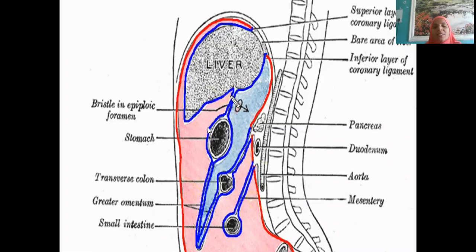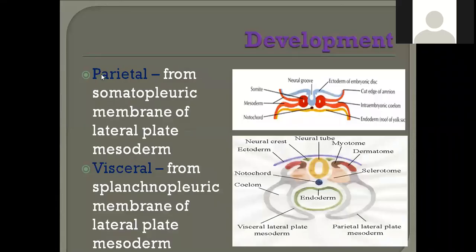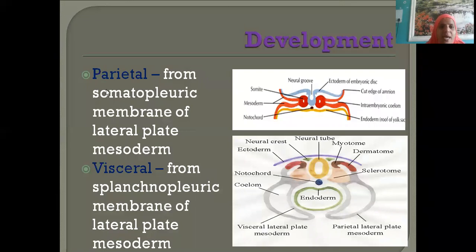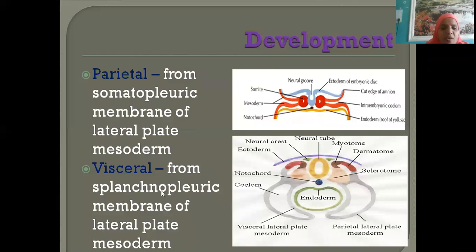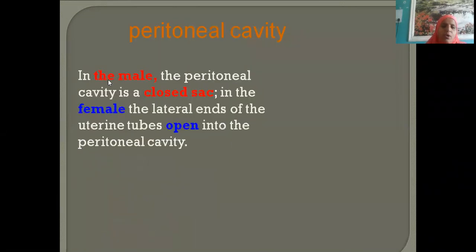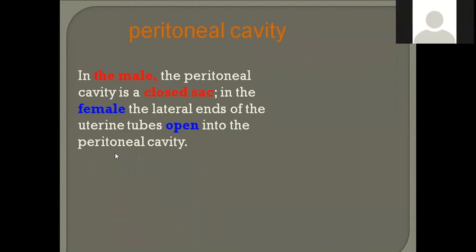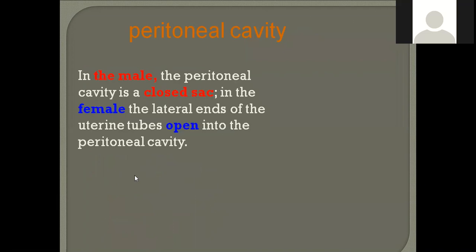The parietal peritoneum, which lines the outside, is derived from somatopleuric membrane of the lateral plate mesoderm and is therefore pain sensitive when triggered or irritated. The visceral peritoneum is derived from the splanchnopleuric membrane of the lateral plate mesoderm and is therefore pain insensitive. The male peritoneal cavity is a closed sac; the female peritoneal cavity is open at the fallopian tubes, to collect the ovum for fertilization.